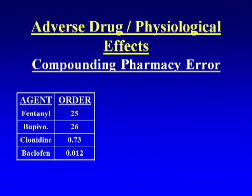There are also adverse drug and physiological effects related to compounding pharmacy error. These agents are typically prepared by independent compounding pharmacies, as they are not commercially available. You have to order it, send it to the pharmacy, they mix it up, and send it back to you.